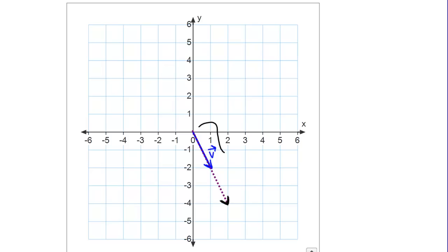Now this purple dotted line is the vector 2V. You can see it's in the exact same direction as V, it's just stretched by a factor of 2.